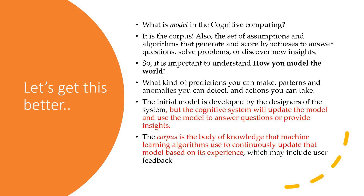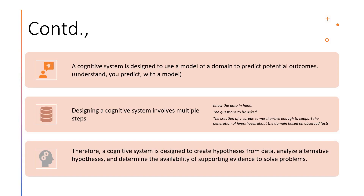The corpus is the base — a collection of knowledge, a body of knowledge which is used by machine learning algorithms or any AI algorithms, and it updates continuously based on the content in the corpus. We are also going to discuss how to build your own corpus in future sessions. A cognitive system is designed to use a model of a domain to predict potential outcomes. The model is built by you initially, can get evolved, and will help you in predicting potential outcomes. The model updates periodically and the learning happens.